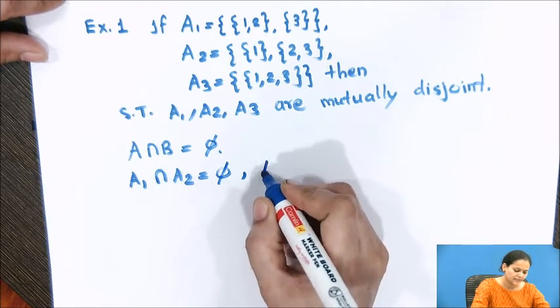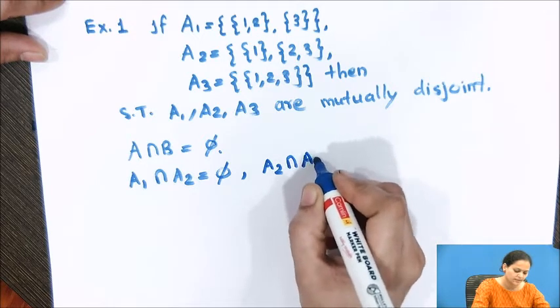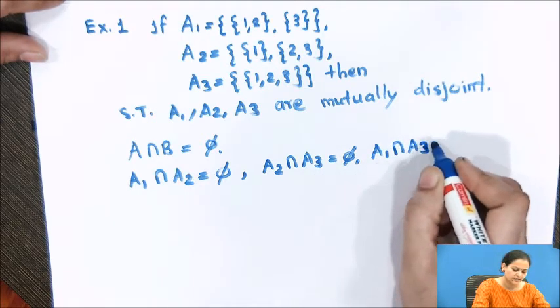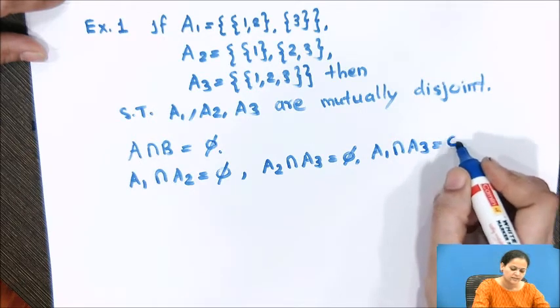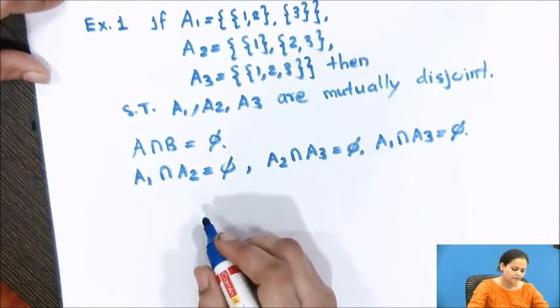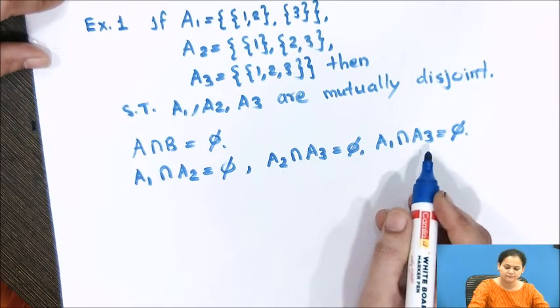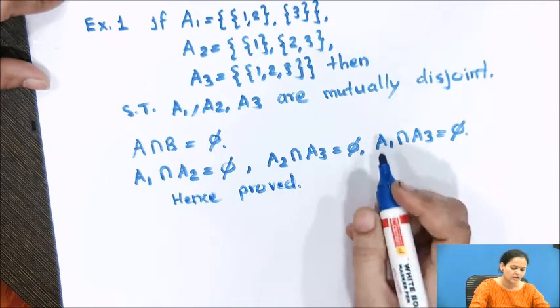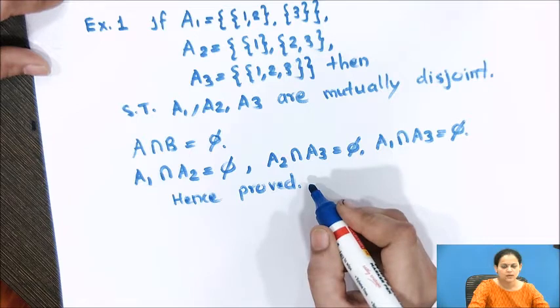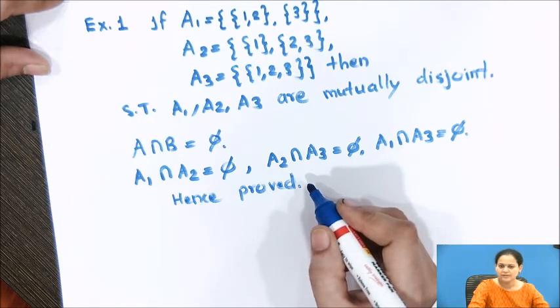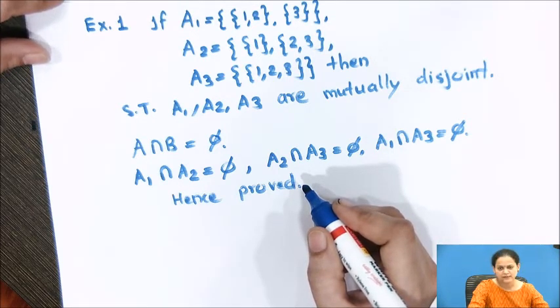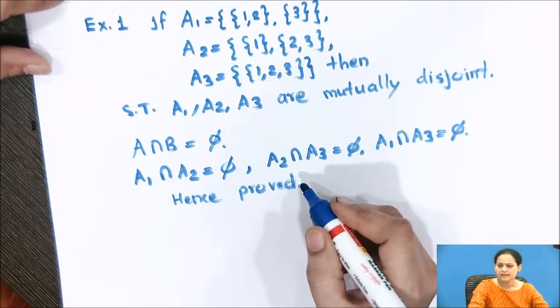Similarly, if I take the intersection between other two pairs like A2 intersection A3, you will observe that it also results in phi. The third pair, A1 intersection A3, also gives phi as the answer. We have shown that all three intersections result in the empty set phi. Hence proved that the given sets are mutually disjoint. That is how you show for any number of sets when asked to prove they are mutually disjoint—simply take intersection between every possible pair and show it equals phi. With this we move on to the second example.